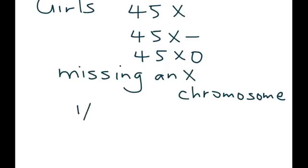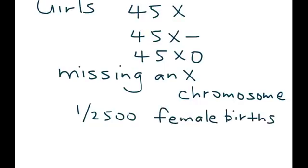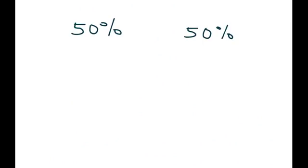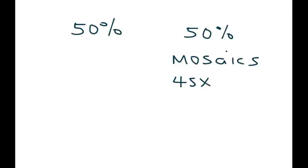This happens in approximately one out of every 2,500 live female births. However, 99% of 45X conceptions abort spontaneously. Another important aspect of Turner Syndrome is that many of these cases are known as mosaics, meaning they are a combination of 45X and 46XX.